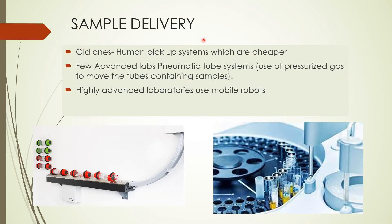Next is sample delivery. In previous methods, a human pickup system was used and it is cheaper — people just pick up the sample and transport it. A few advanced labs use pneumatic tube systems, which use pressurized gas to move tubes containing samples. Highly advanced laboratories use robots — there is a robotic conveying way of transport where they pick up the tube and transfer it.